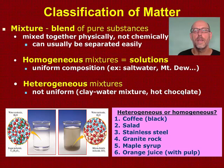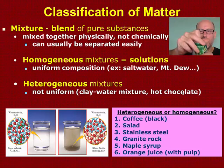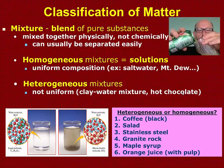The last thing that we want to take a look at today is classification of matter. Mixtures are blends of pure substances, things that are mixed together physically but not chemically, and they can usually be separated easily. There are homogeneous mixtures and heterogeneous mixtures.